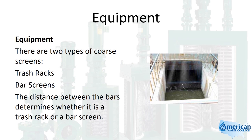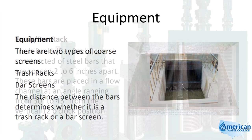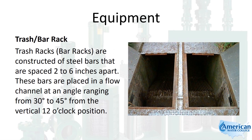There are two types of coarse screens: trash racks and bar screens. The distance between the bars determines whether it's a trash rack or a bar screen. Trash racks, also called bar racks, are constructed of steel bars spaced 2 to 6 inches apart, placed in a flow channel at an angle ranging from 30 to 45 degrees from the vertical 12 o'clock position.